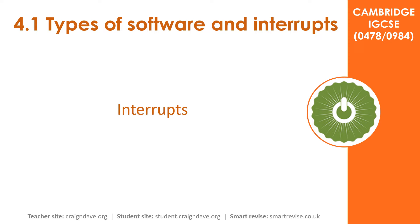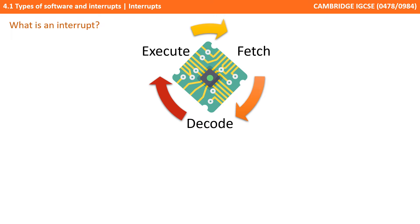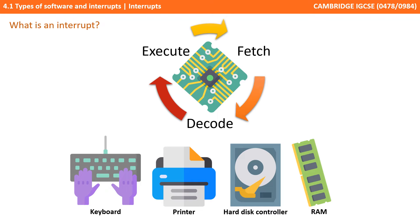In this video we take a look at interrupts. A computer system executes programs, and it does this by the processor fetching, decoding and executing instructions over and over again. While this is occurring, other devices and applications may require the processor's attention. They need a way to signal to the processor that they require attention, and this is what we call an interrupt.